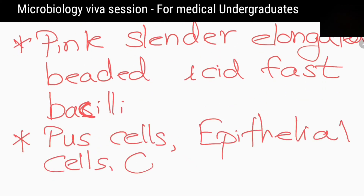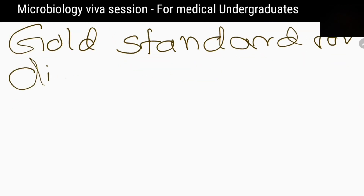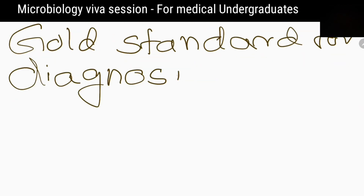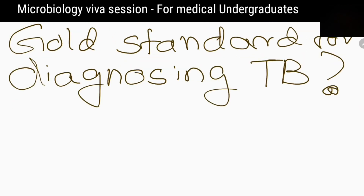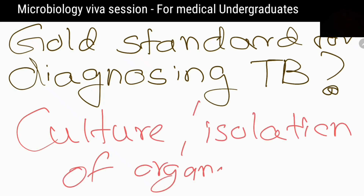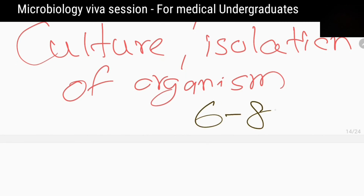What is the gold standard for diagnosis of tuberculosis? Culture of the organism. How long should you incubate the sputum cultures before discarding as negative? 6 to 8 weeks.